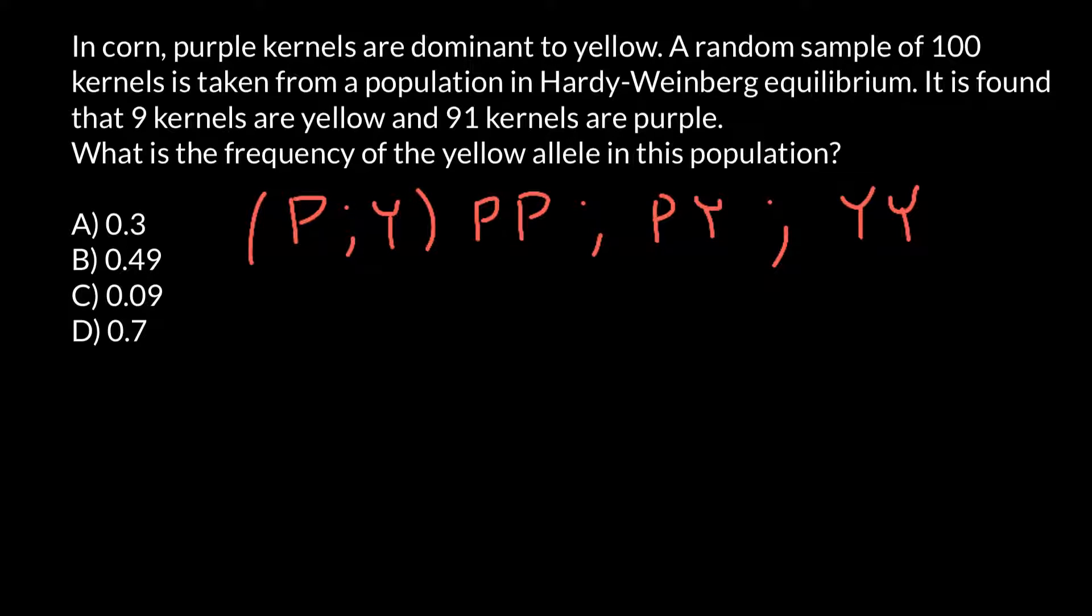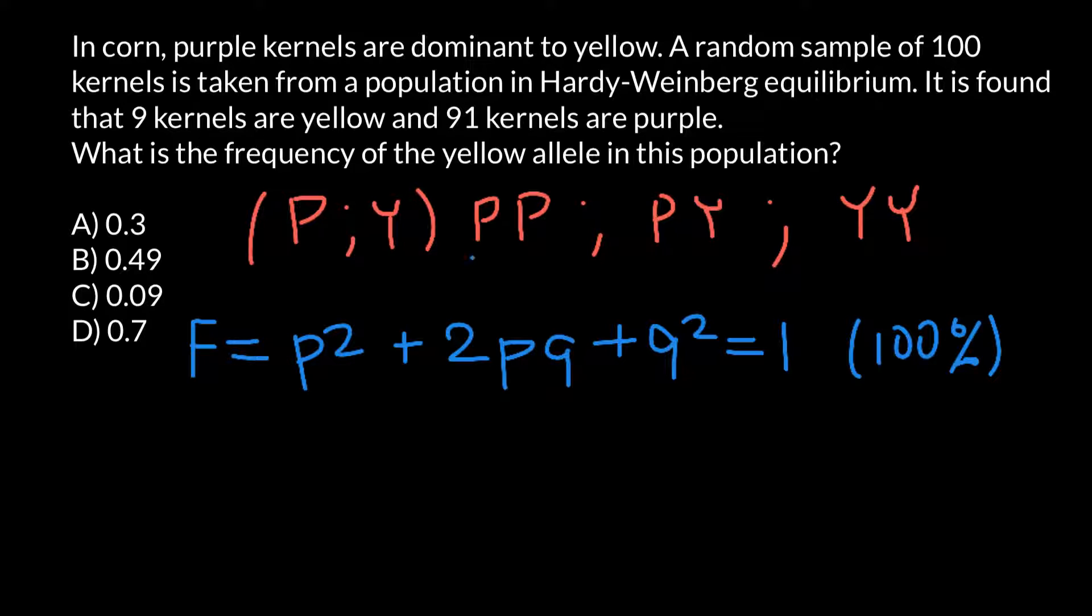And here is the Hardy-Weinberg formula where frequency of the three genotypes would equal to P squared plus 2PQ plus Q squared. And all this would equal to 1, or we also can say 100%.